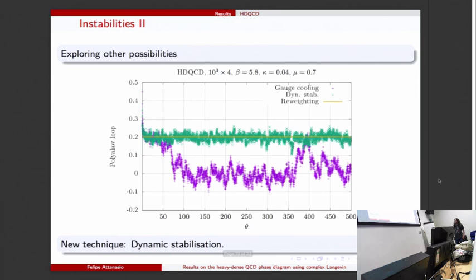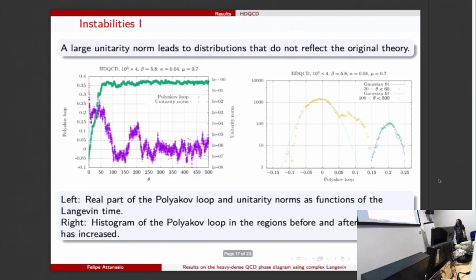We have tested for other cases where using dynamic stabilization we see no problem whatsoever - the unitarity norm is under control for the entire simulation and the results seem to agree with results from other methods. If you look at the histogram they also seem okay - there's no - we don't see anything like this, not remotely.